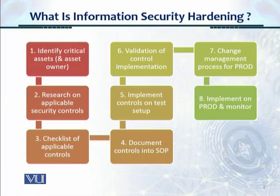In step number six, a validation is conducted in the test setup for the controls on that particular IT asset — have all the controls been implemented or not? In step number seven, we conduct a change management process because we are moving the controls to the production environment and we actually implement them. In step number eight, we implement on the production environment and then monitor.